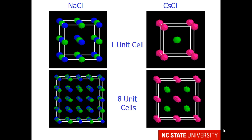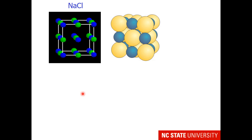Here are two unit cells for students to become familiar with: the sodium chloride and the cesium chloride unit structures. I'll go over the sodium chloride structure in detail. On the left is a picture where the ions are small so we can see inside the unit cell. On the right is a picture with ions at their relative appropriate sizes, showing larger ions on the corners and faces, and smaller ions on the edges and in the center. The first question might be: which ion is which?